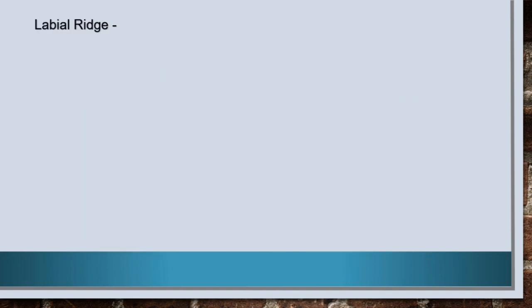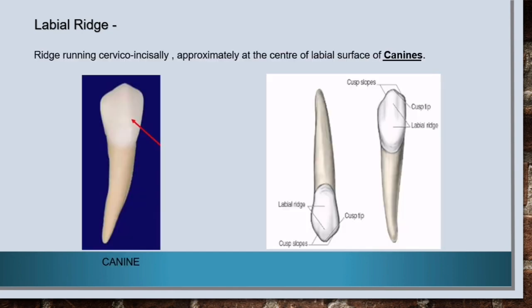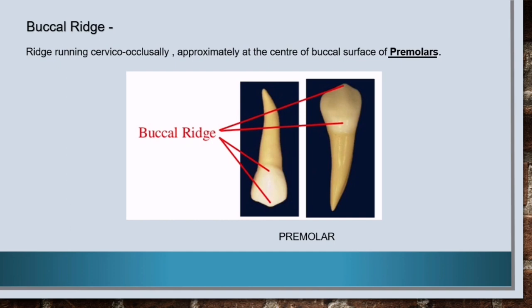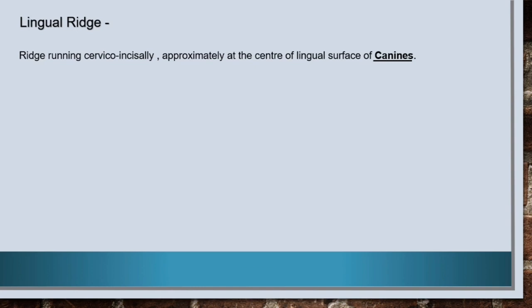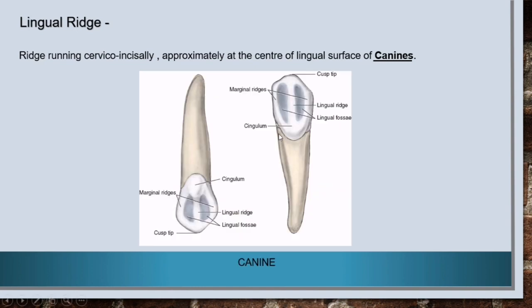Second is labial ridge and, as the name suggests, this ridge is found on the labial surface and it runs cervico-incisally, i.e. from the cervical margin to the incisal surface, approximately at the center of the labial surface of canines. Next is buccal ridge which is found on the buccal surface and runs cervico-occlusally, i.e. from the cervical margin to the occlusal surface, approximately at the center of the buccal surface of premolars. Next is lingual ridge, found on the lingual surface, running cervico-incisally approximately at the center of the lingual surface of canines.